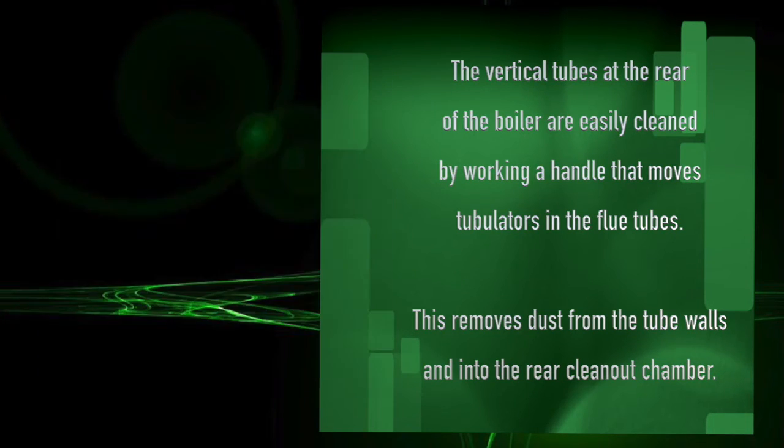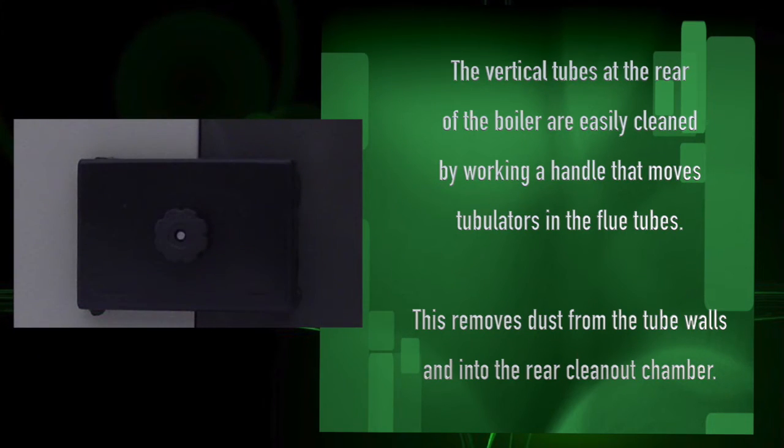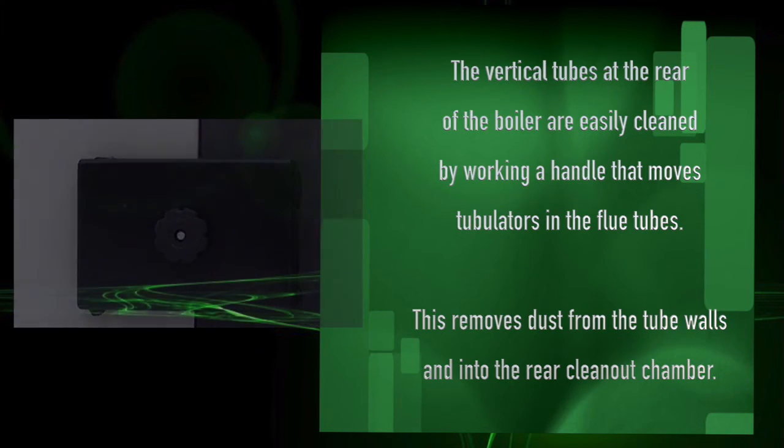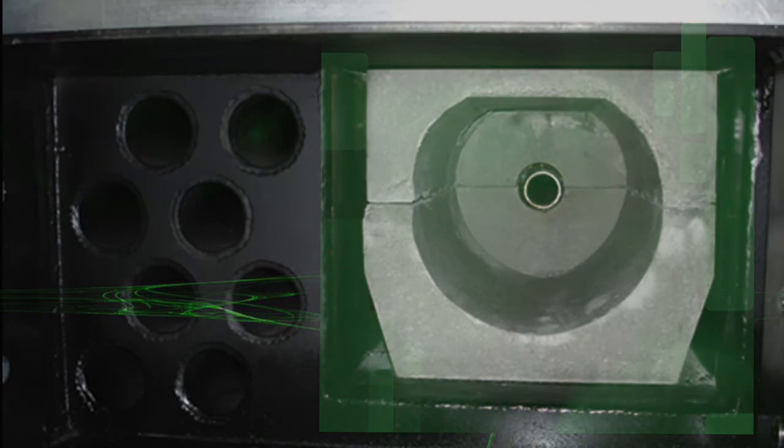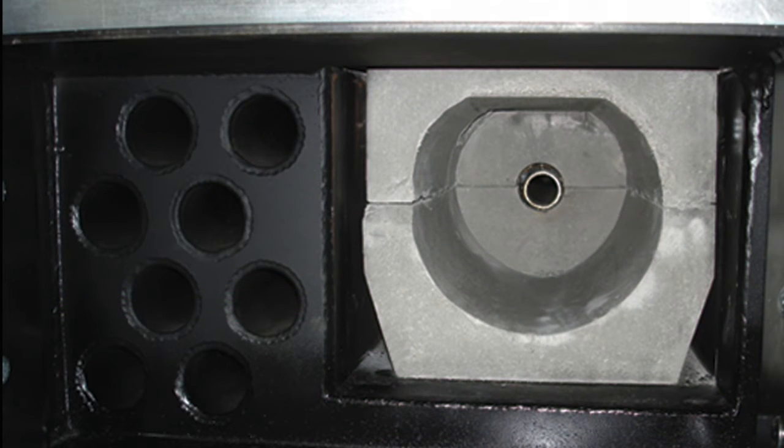This removes dust from the tube walls into the rear clean-out chamber. The bottom horizontal flue tubes are cleaned as necessary. The negative pressure suction combustion fan helps keep the dust to a minimum.